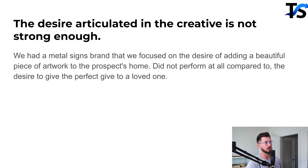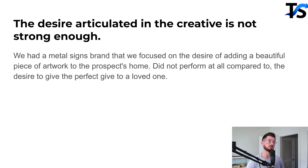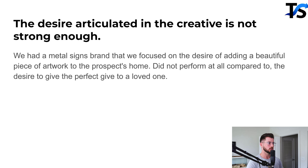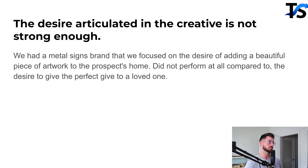We took a step back and figured out other desires. Another one was giving a perfect gift to a loved one. We went from doing $7,000–$10,000 a month in revenue to roughly $100,000–$200,000 per month by completely swapping the desire. When we hit that 'perfect gift' desire, we also articulated it in the ad by showing people giving it to their loved one and their loved one reacting emotionally — loving it.